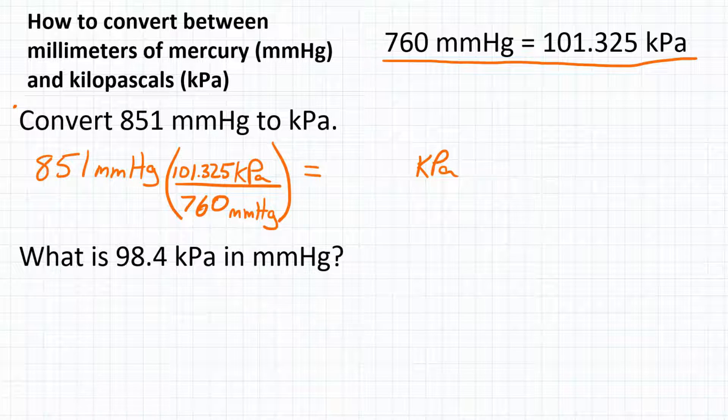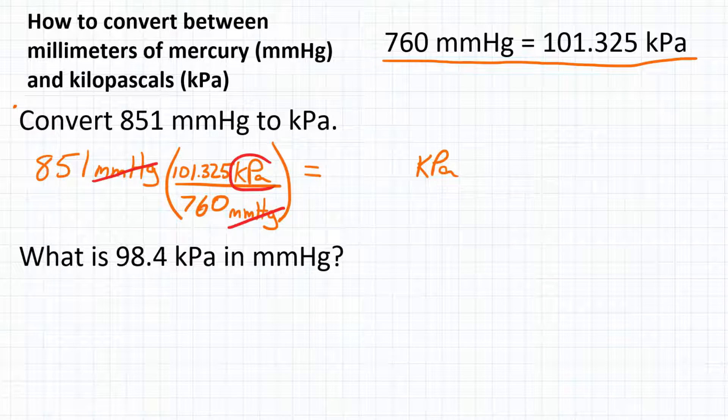Looking at our units, they'll cancel out just like we need. Millimeters of mercury is on top because that's what we're starting with. So we put it on bottom of our conversion factor so that they will cancel out, and we will be left with kPa.